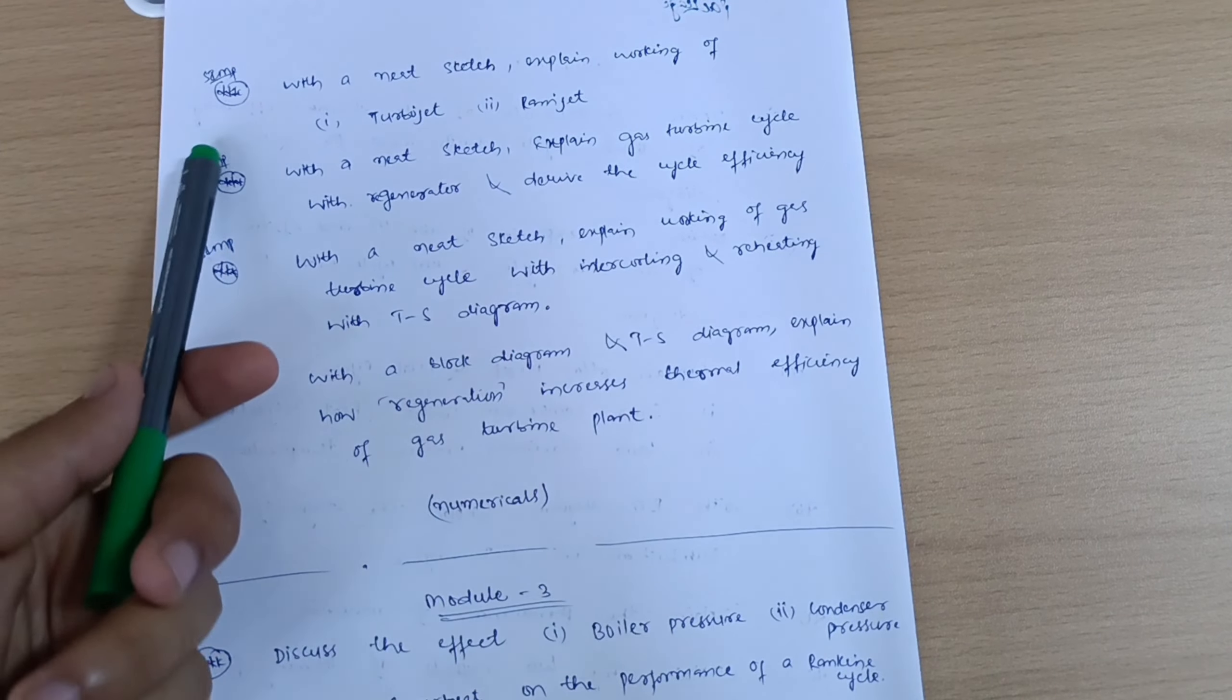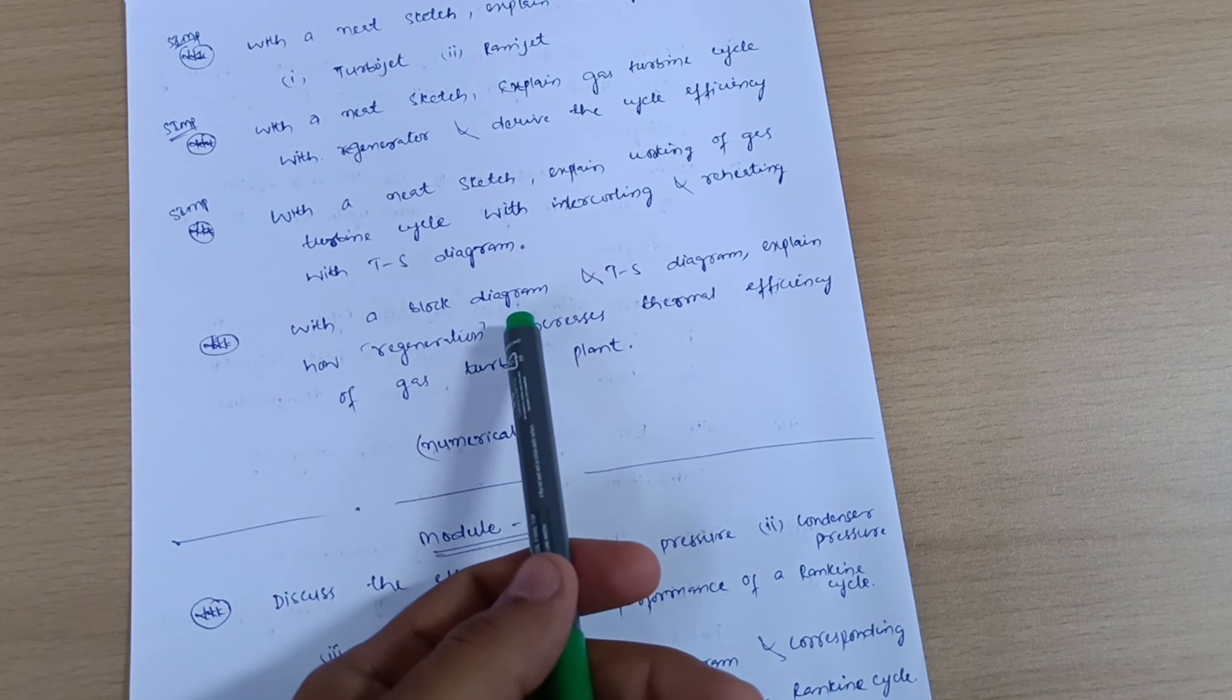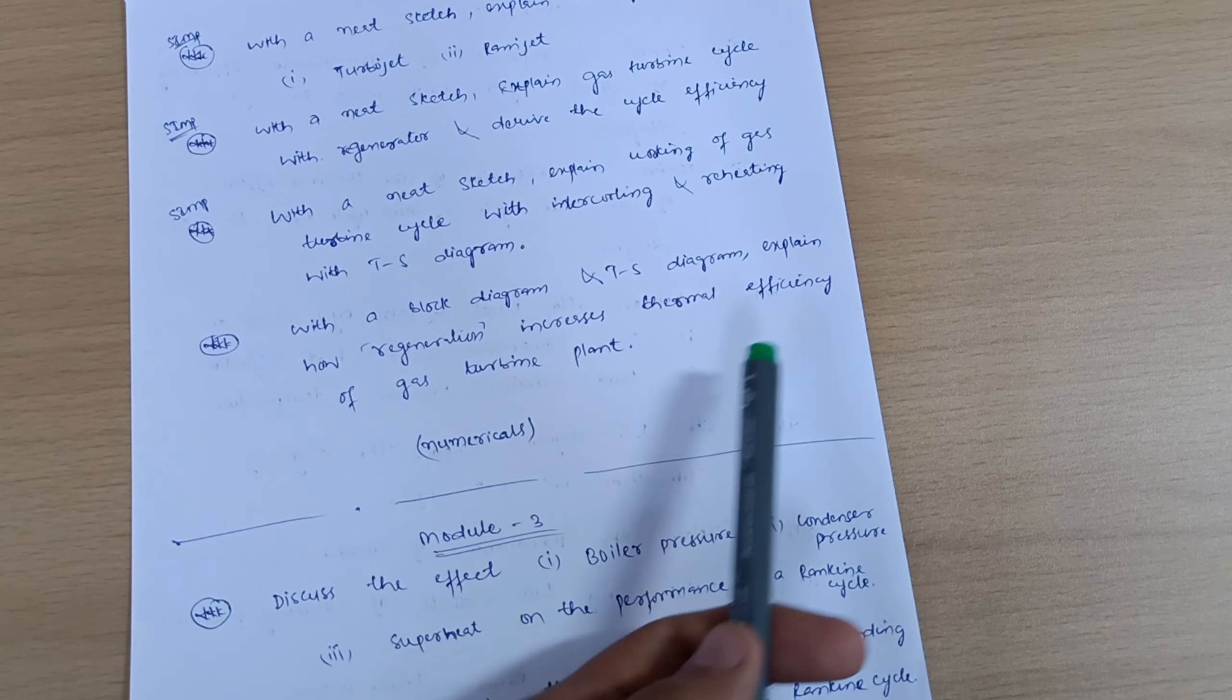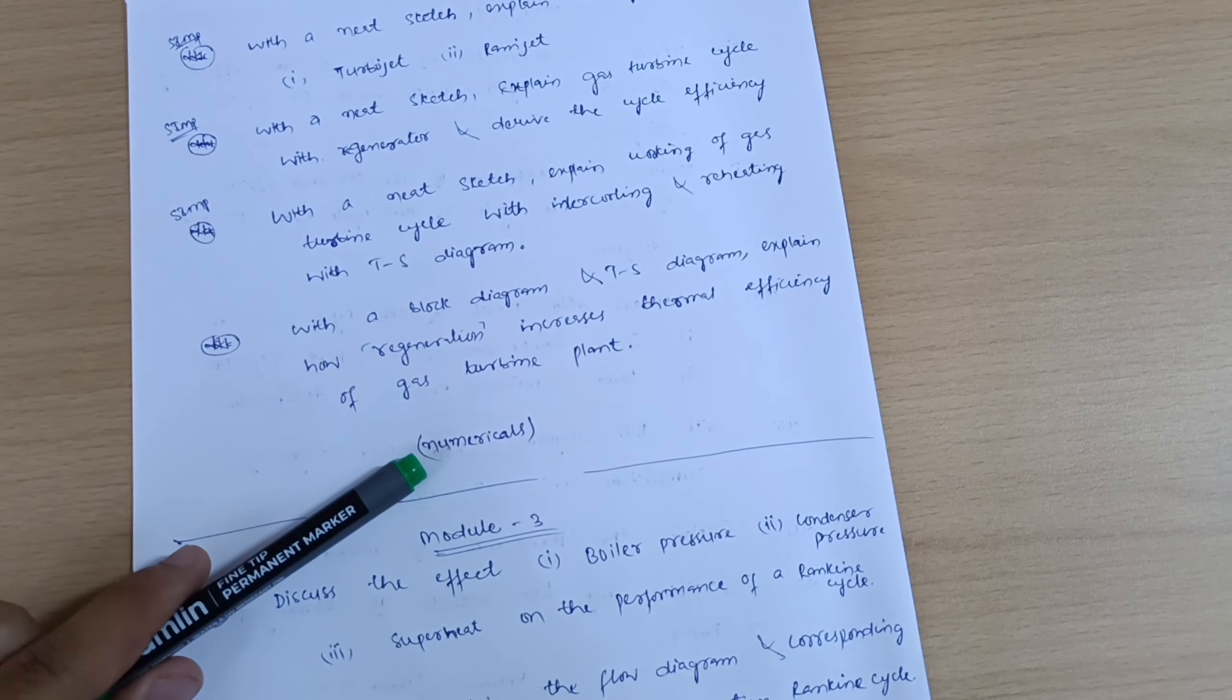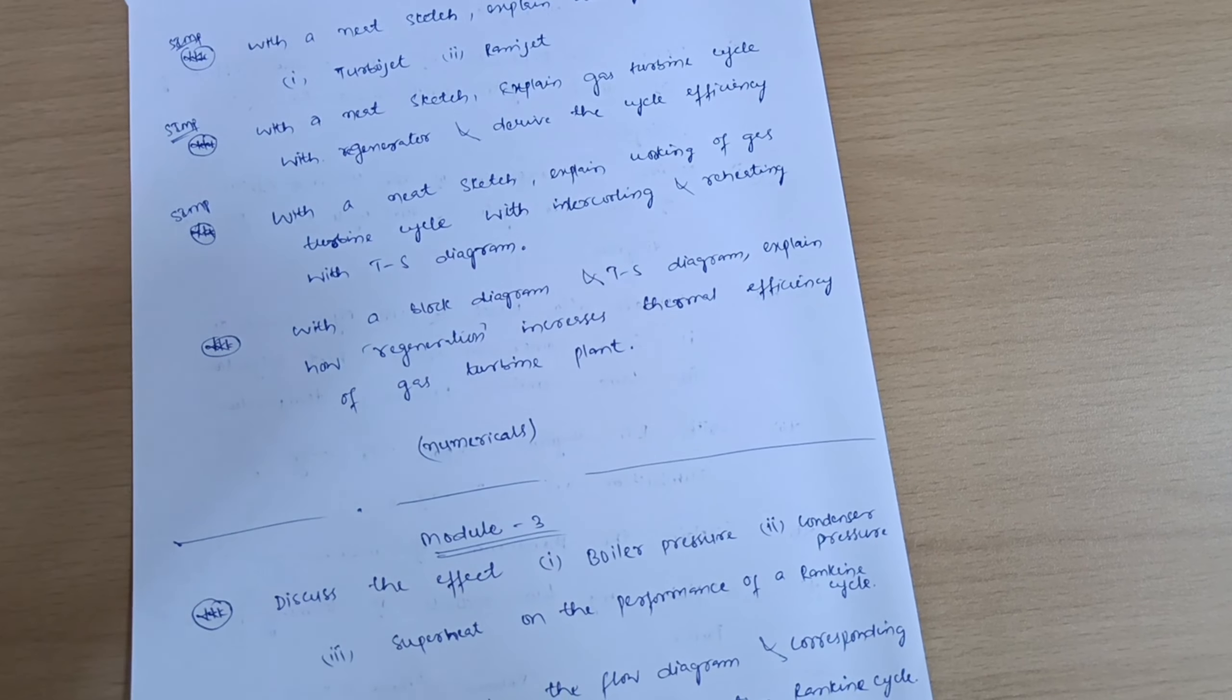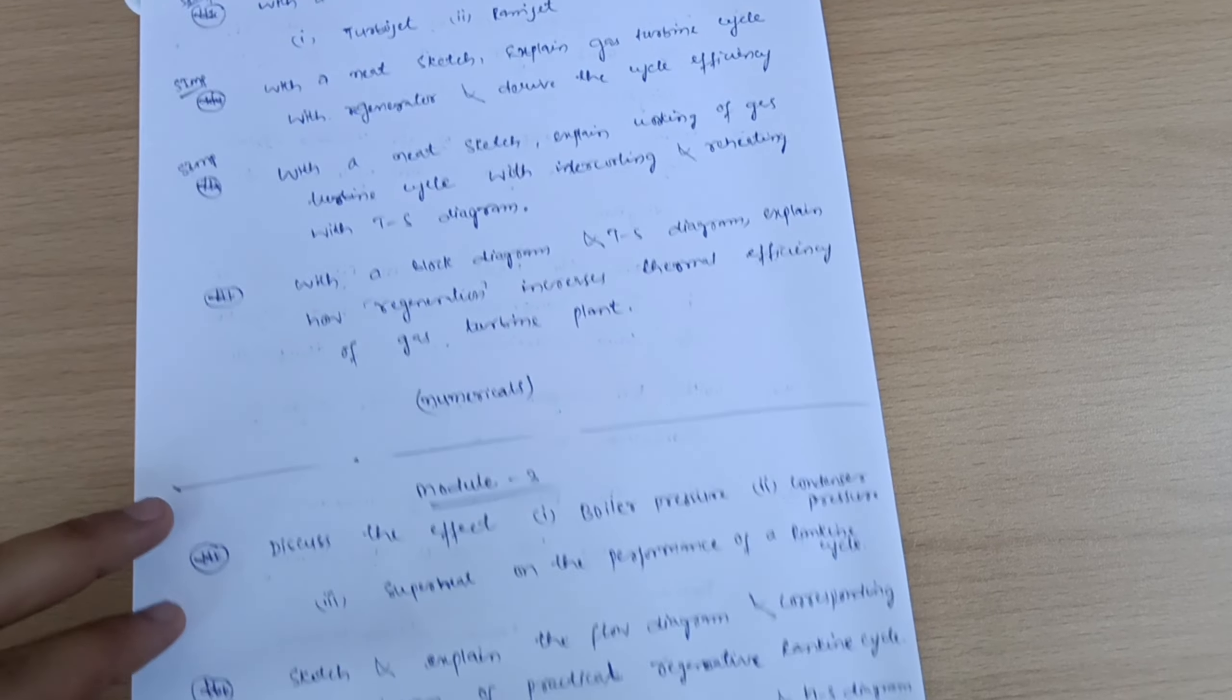With a neat sketch, explain working of gas turbine cycle with intercooling and reheating with TS diagram. These are the three super important questions. Next is: with a block diagram and TS diagram, explain how regeneration increases thermal efficiency of gas turbine plant. So again, go for numericals by using a data handbook. You can go through the numerical part if you feel comfortable with the numericals.